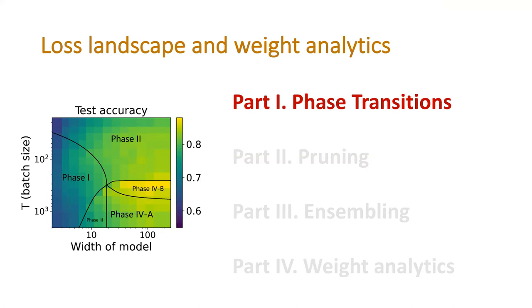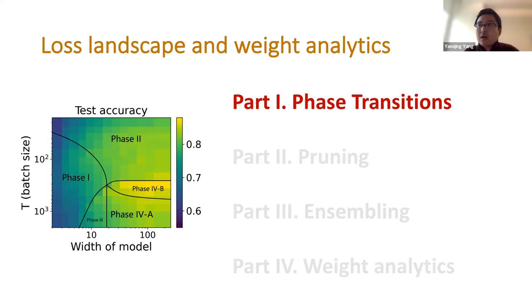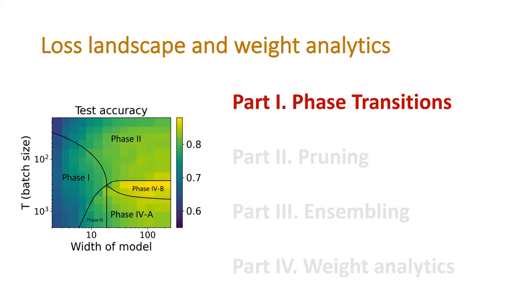Question: How stable are these observations over the depth of the neural network? Answer: In the experiments shown here we haven't explicitly varied depth, but in a follow-up paper we did include depth experiments and saw very similar observations. Depth gets entangled with the temperature parameters — if you change depth you also have to change hyperparameters accordingly — but if you account for that, you see the same phases. The experiments shown here use a ResNet-18.